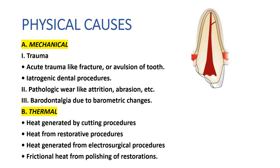Trauma can occur during sports, accidents, or due to habits such as opening bobby pins with the teeth or nail biting — all of which can cause pulpal injury. Pathologic wear from attrition, abrasion, bruxism, or abfraction can also injure the pulp.